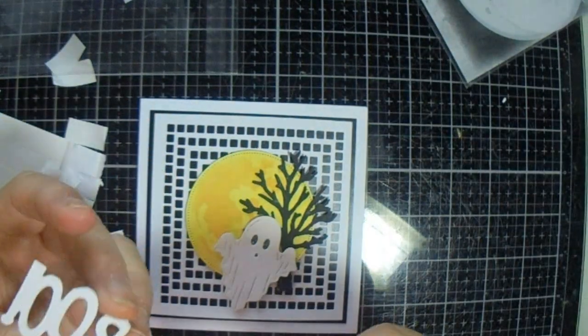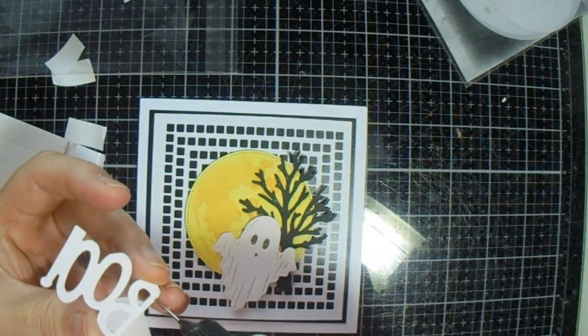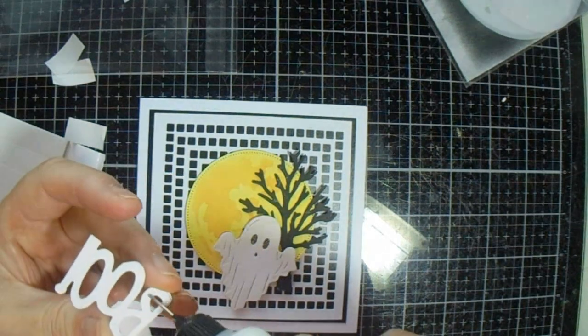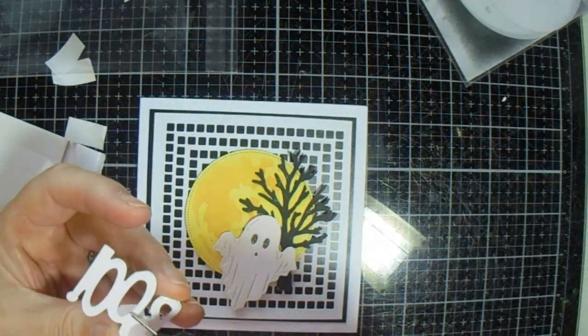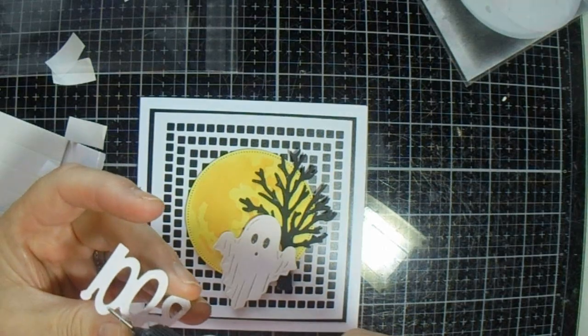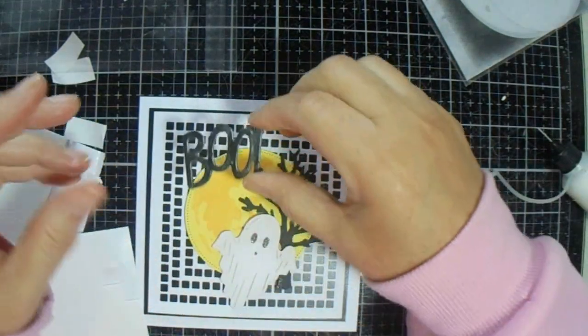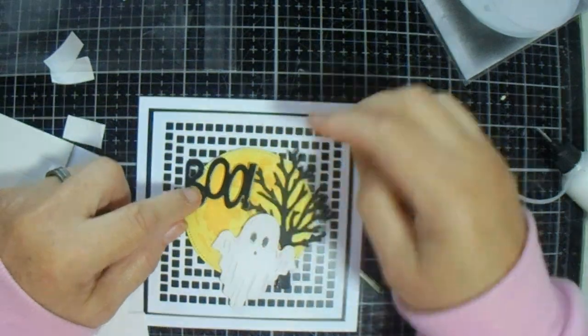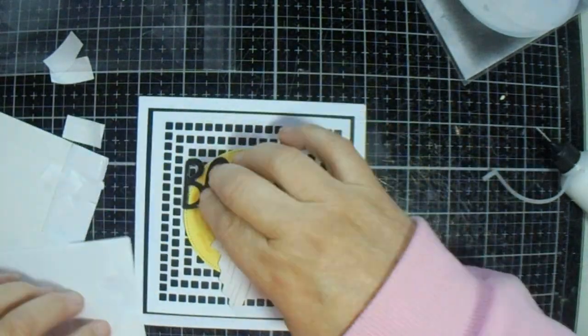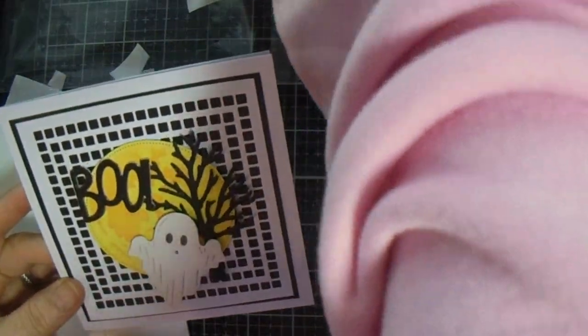And to finish it off, we're going to put our boo up there. Now this belongs on a die that says boo boo boo, and I just cut the bottom bit off it to use as I please. And that is our quick Halloween card.